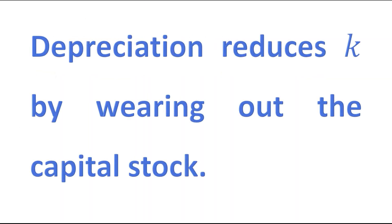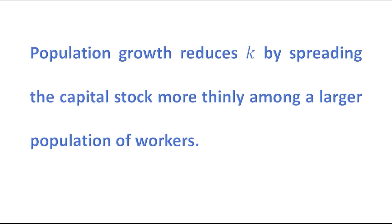Depreciation reduces capital stock per worker by wearing out the capital stock. Population growth reduces capital stock per worker by spreading the capital stock more thinly among a larger population of workers. It is very simple: if the number of workers increases, then the capital stock per worker will decrease.